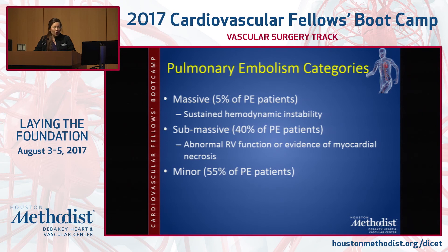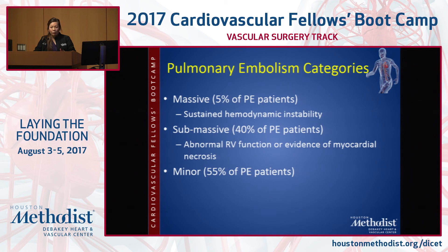The different subtypes are massive, submassive, and minor. Massive only accounts for 5 percent. Minor is the largest percentage. Then submassive — the sort of middle area — is controversial on how you treat these patients. That's defined as abnormal RV function on some sort of imaging, but without hemodynamic instability.